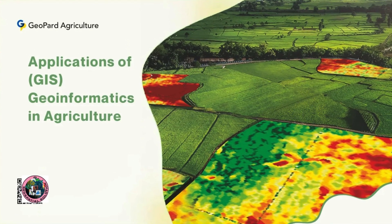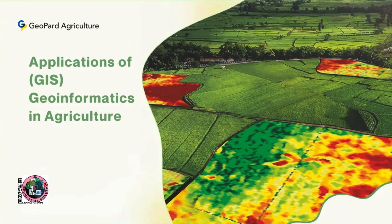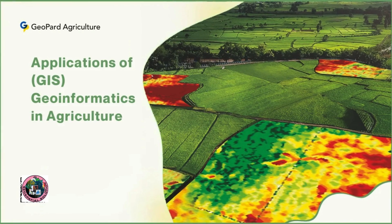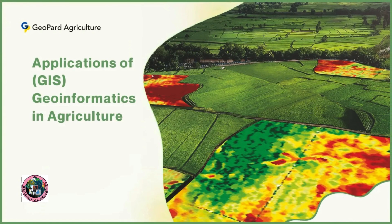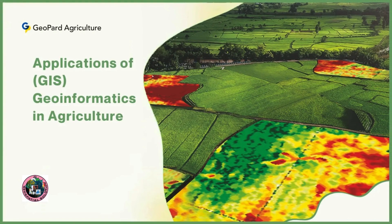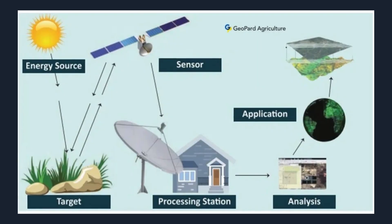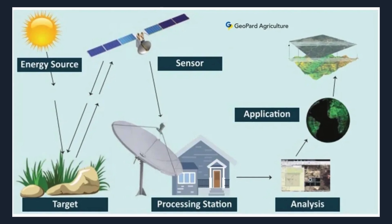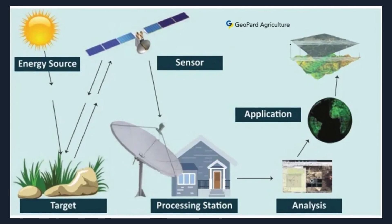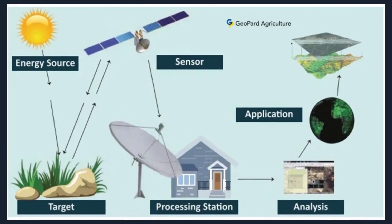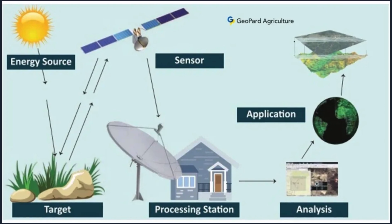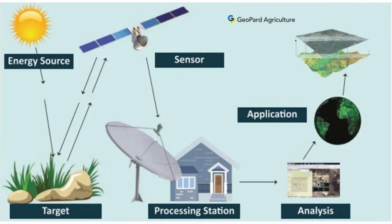By analyzing precise spatial information, such as soil variability, moisture content, and pest distribution, farmers can make well-informed choices, ensuring that each area of their land receives the exact treatment it requires.